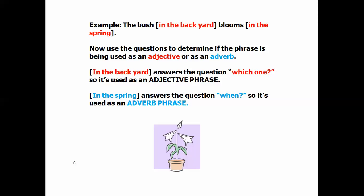For example, the bush in the backyard blooms in the spring. We know the phrases are in the backyard and in the spring. So now we're going to use the questions to determine whether the phrase is being used as an adjective or as an adverb. In the backyard answers the question, which one? Which bush? In the backyard. So this is an adjective phrase. In the spring answers the question when, because it tells you when it blooms. So this one is being used as an adverb phrase.